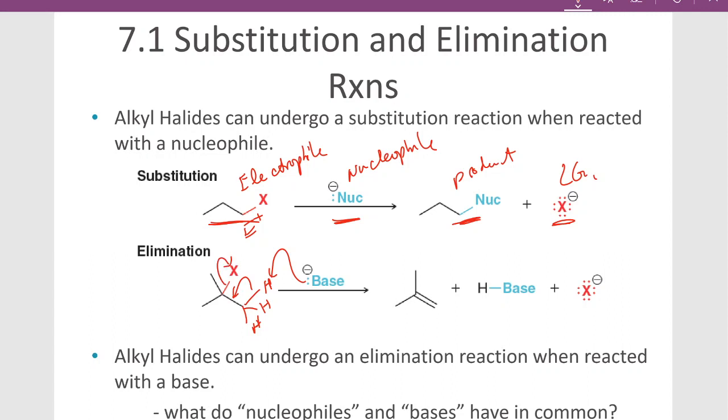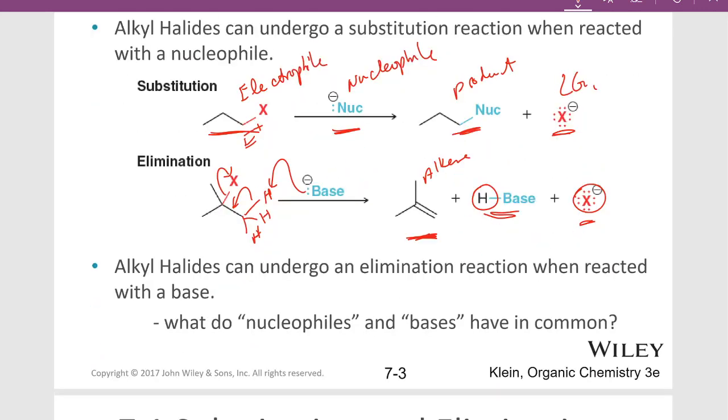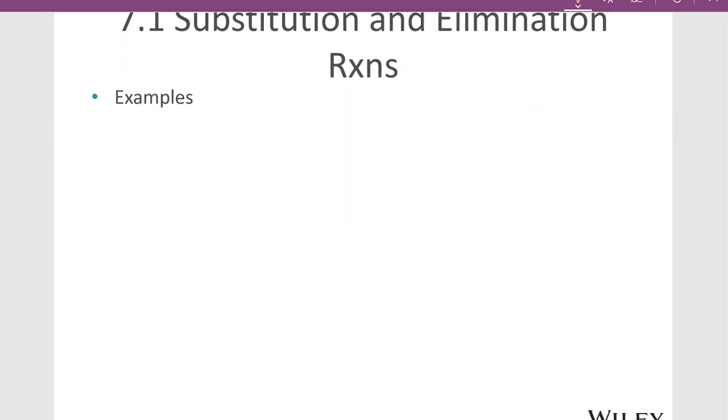When that happens, we get what's called an elimination reaction because we're eliminating the hydrogen and the leaving group, and we're forming a double bond. This reaction is going to form an alkene from our alkyl halide, and the other products of this reaction are going to be the base that's now protonated, the conjugate acid of the base plus the halogen, or the leaving group.